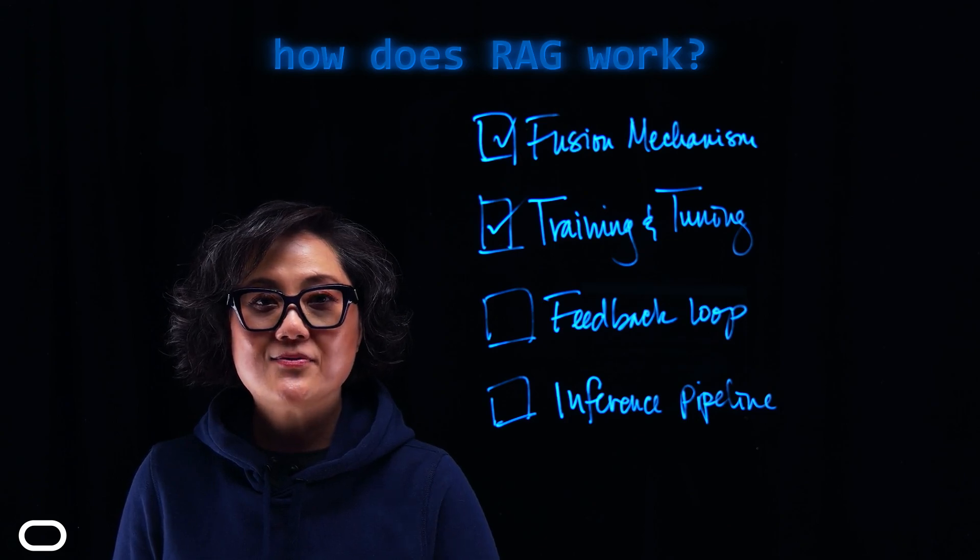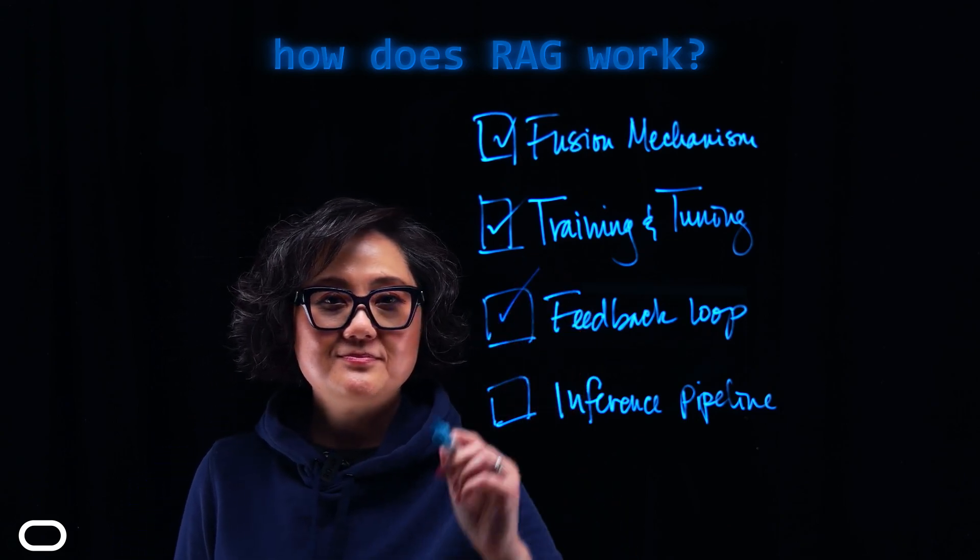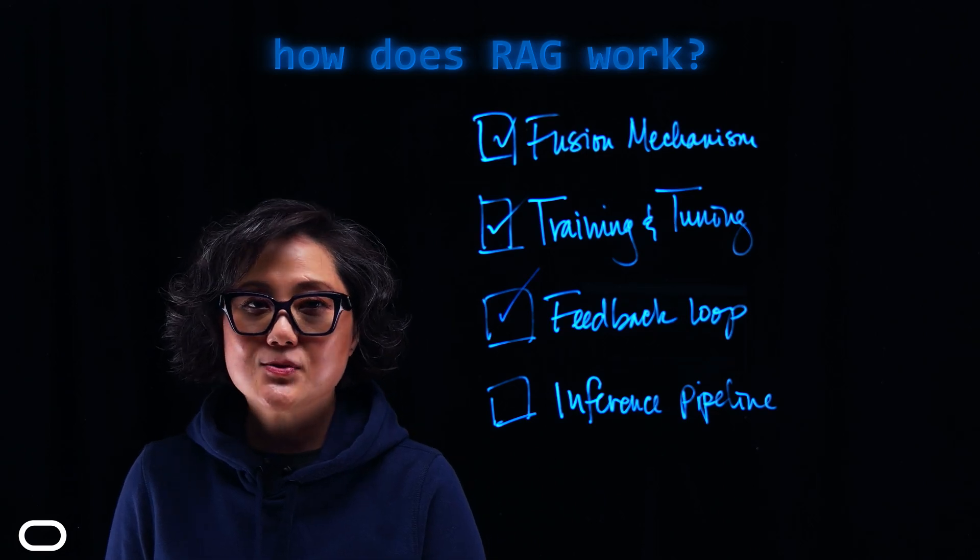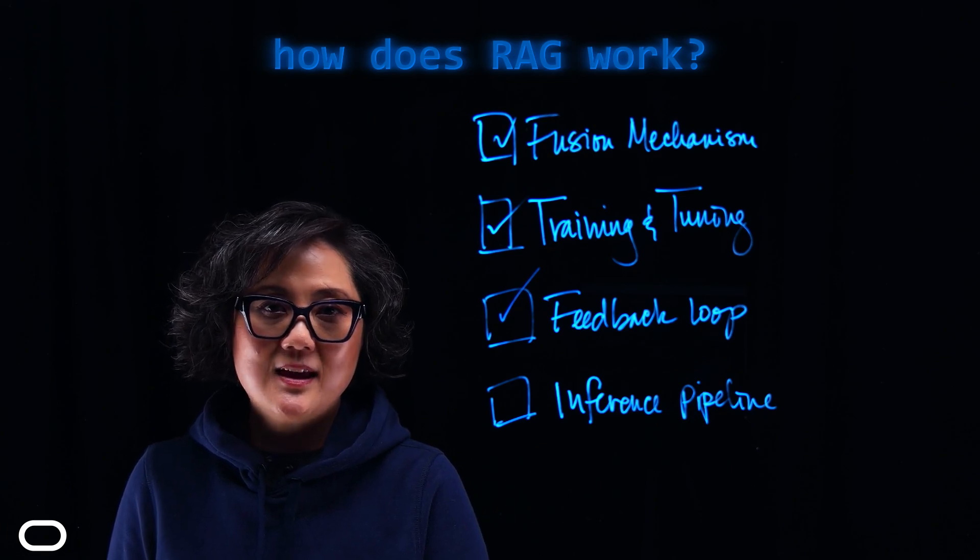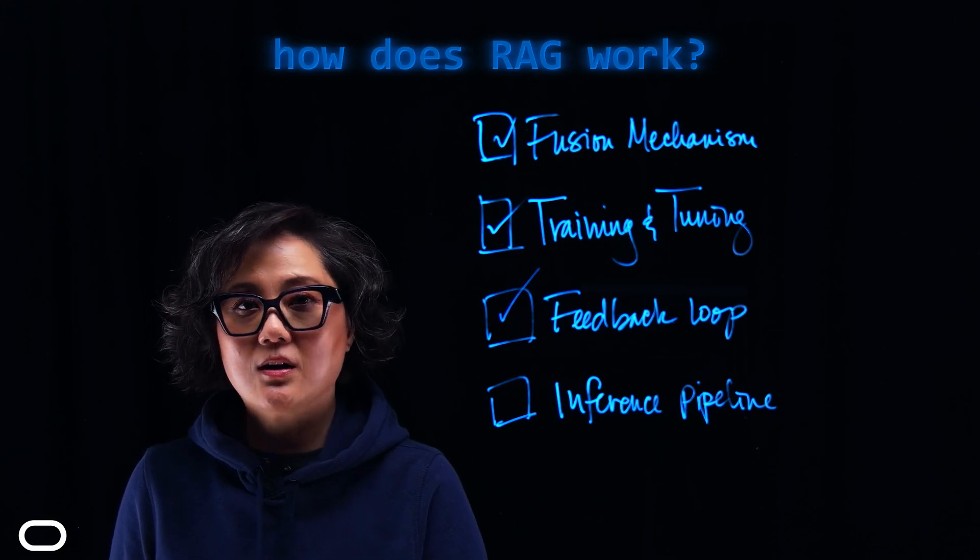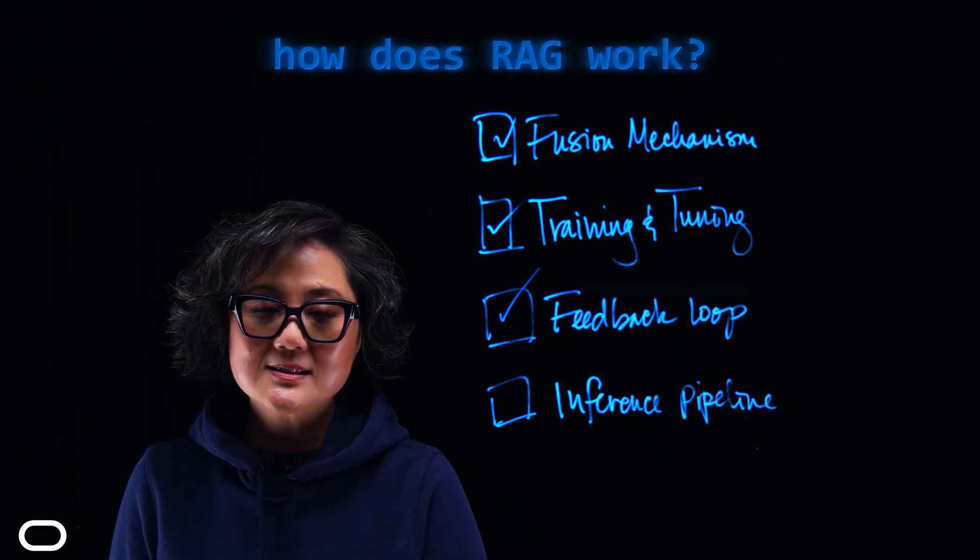Next, we have Feedback Loop. It's a method to continuously improve the retriever and generator based on feedback from the generated outputs. And this can include user feedback, manual corrections, or automated evaluation metrics.